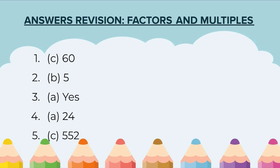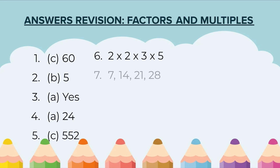Question 5: C option, 552. Question 6: 2 × 2 × 3 × 5. Question 7: 7, 14, 21, 28. Question 8: B option, No.